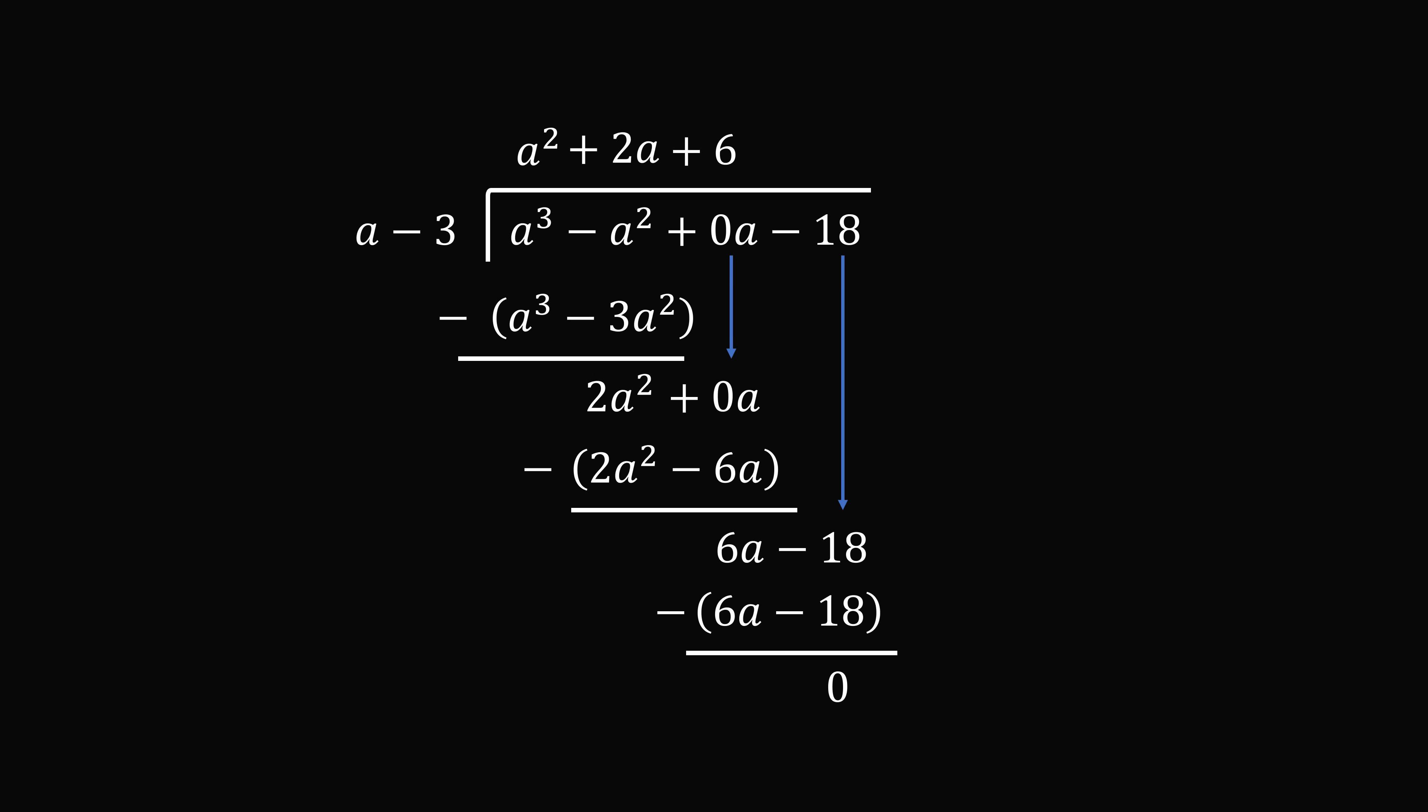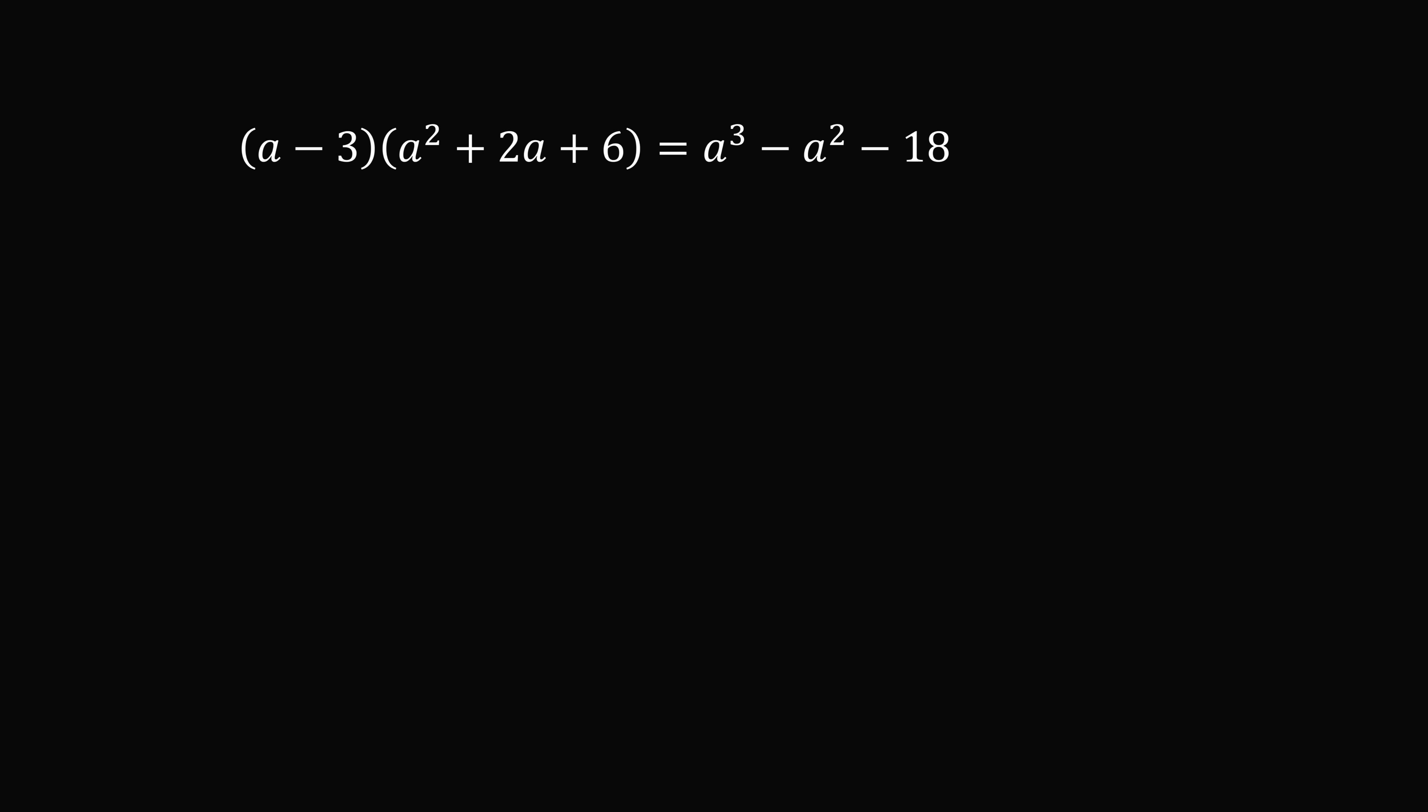So the original polynomial divided by a minus 3 is equal to a squared plus 2a plus 6. In other words, a minus 3 multiplied by a squared plus 2a plus 6 is equal to the original polynomial. Now we want this to be equal to 0. So that means either a minus 3 is equal to 0 or the quadratic is equal to 0. If the first factor is equal to 0, that means a is equal to 3. We already knew that. So now we solve this quadratic equation to be equal to 0.